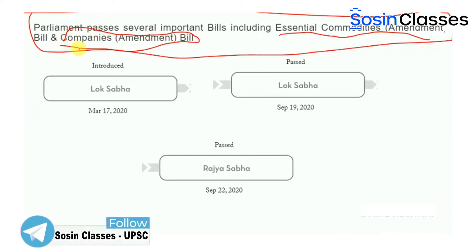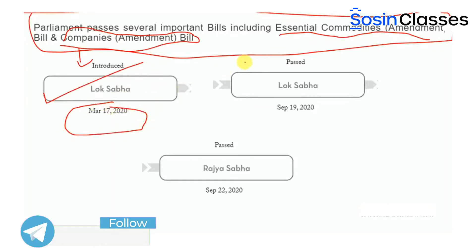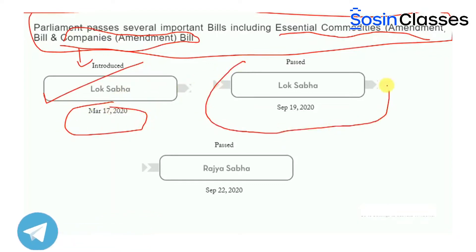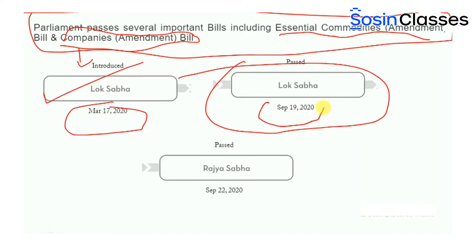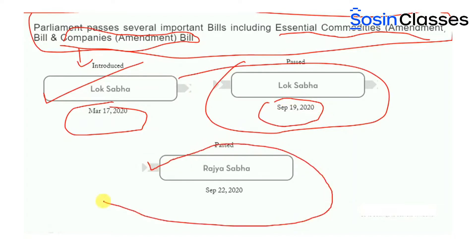The Companies Amendment Bill was introduced in the Lok Sabha in the month of March this year, passed in the Lok Sabha on 19th of September 2020, and also passed in the Rajya Sabha on 22nd of September 2020.